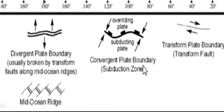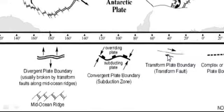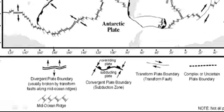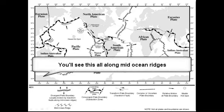The transform plate boundary is where plates go side by side. The San Andreas Fault is a famous example. You'll also see how parallel lines are offset from each other — these divergent plate boundaries are offset because of a transform plate boundary that slid left and right.